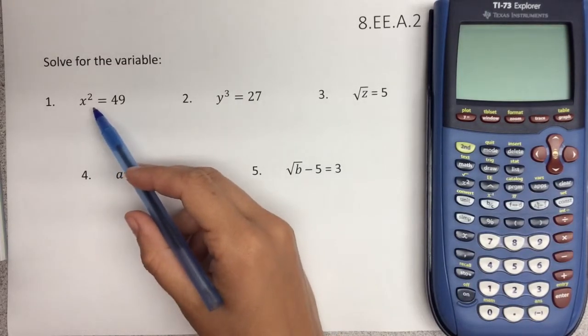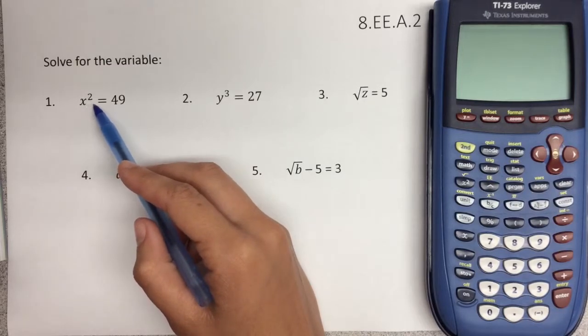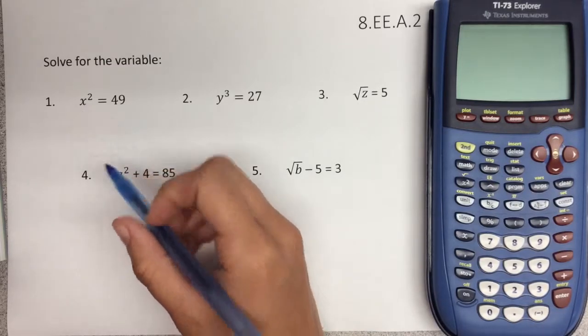So for number one, we have x squared equals 49. In order to get our variable isolated, which is x, we need to get rid of the square. So the opposite of a square is a square root.